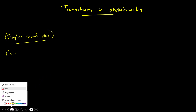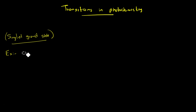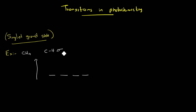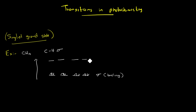Let's start from the simplest one — methane, CH4. To understand the transitions, let's look at the molecular orbital diagram. There are four molecular orbitals which are carbon-hydrogen sigma bonds — sigma bonding orbitals. There are no pi bonds and no non-bonding orbitals. There are also four anti-bonding orbitals — these are sigma star anti-bonding orbitals.